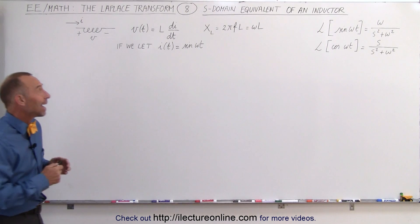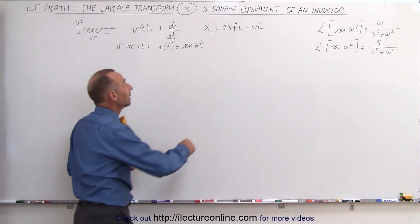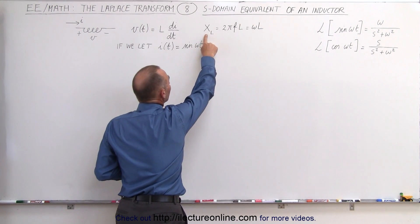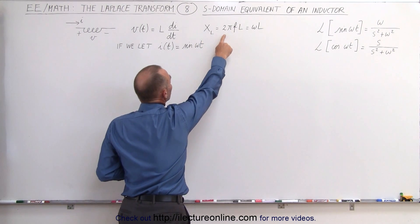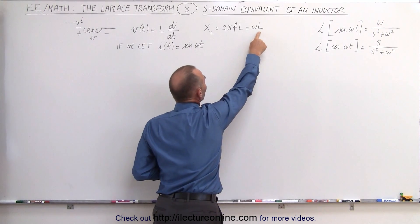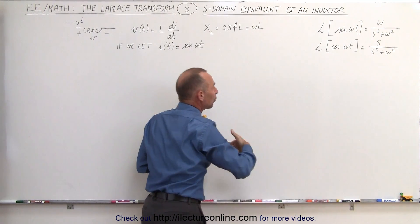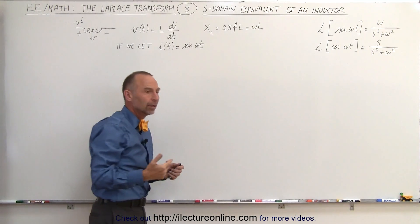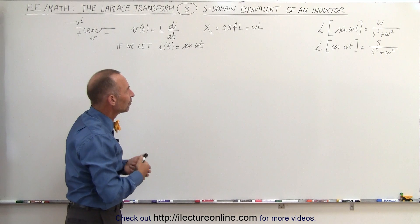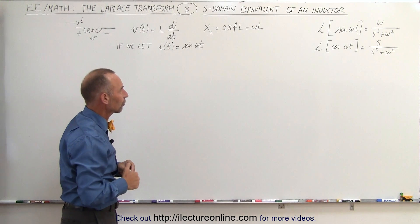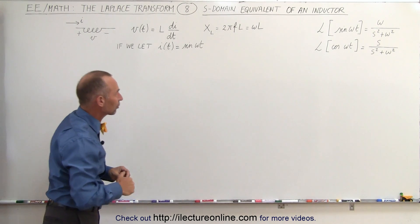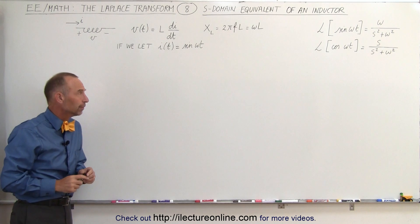We know that in the time domain, the reactance of an inductor is equal to 2πFL, or can also be written as ωL, where ω is the radial frequency of the current and voltage of the circuit, and L is of course the inductance of the inductor.